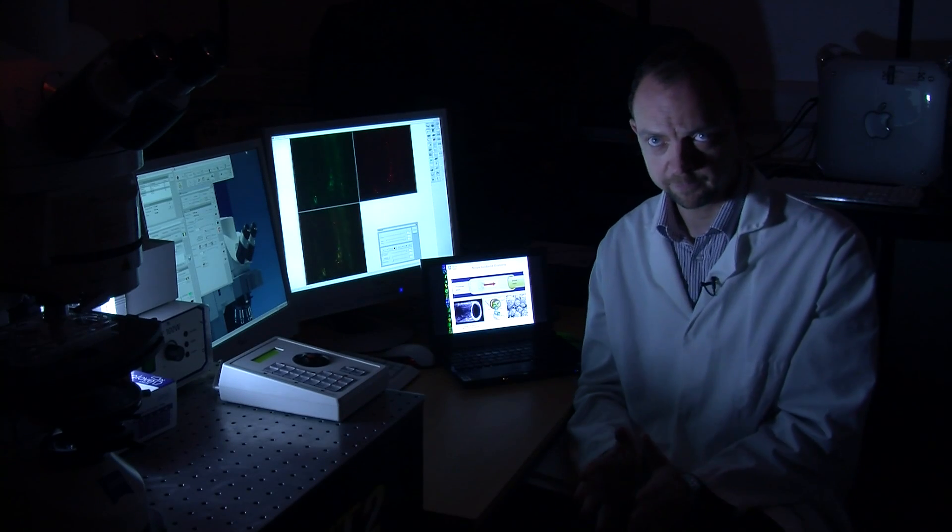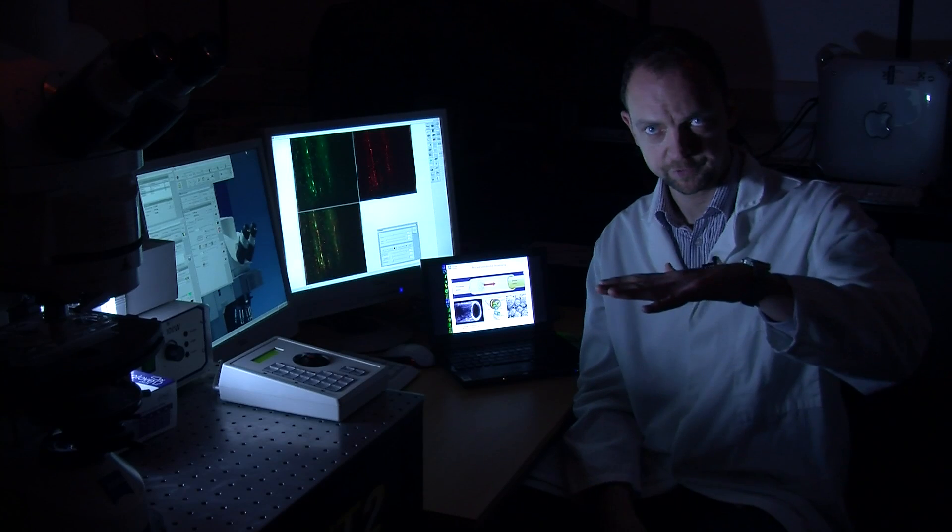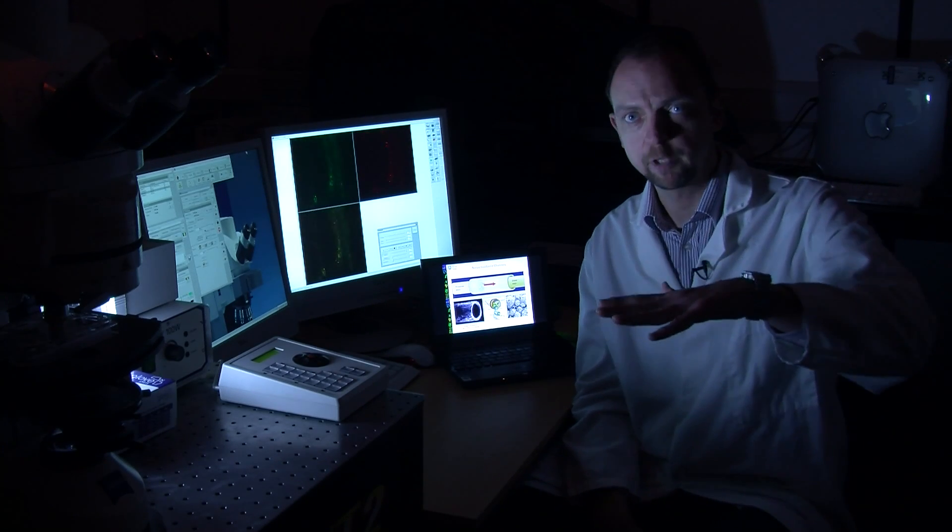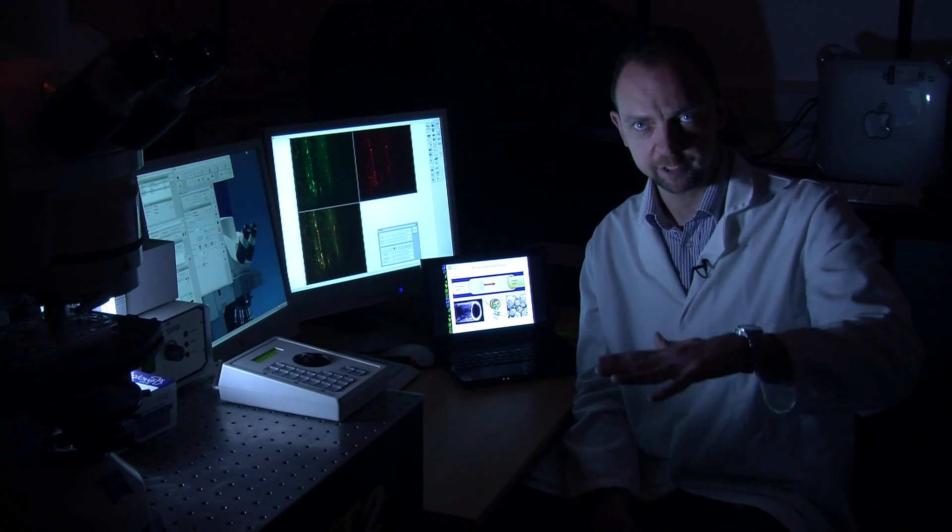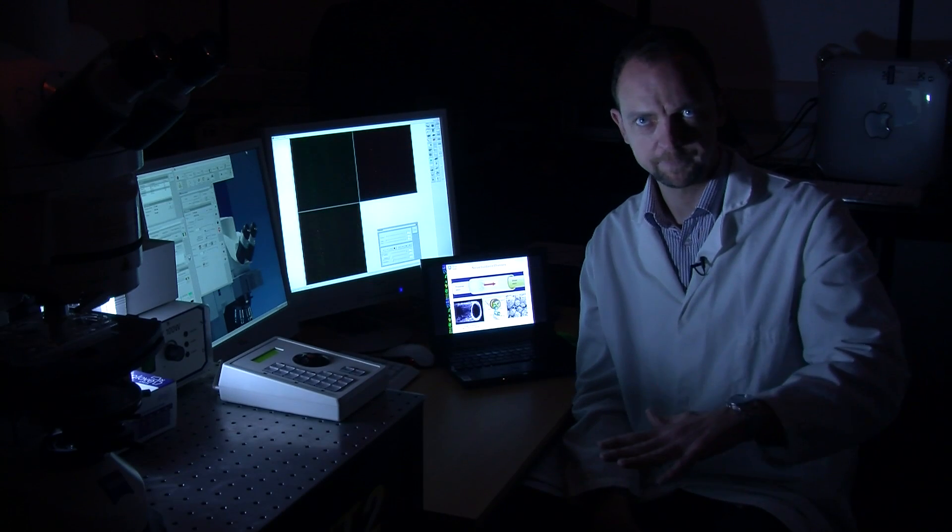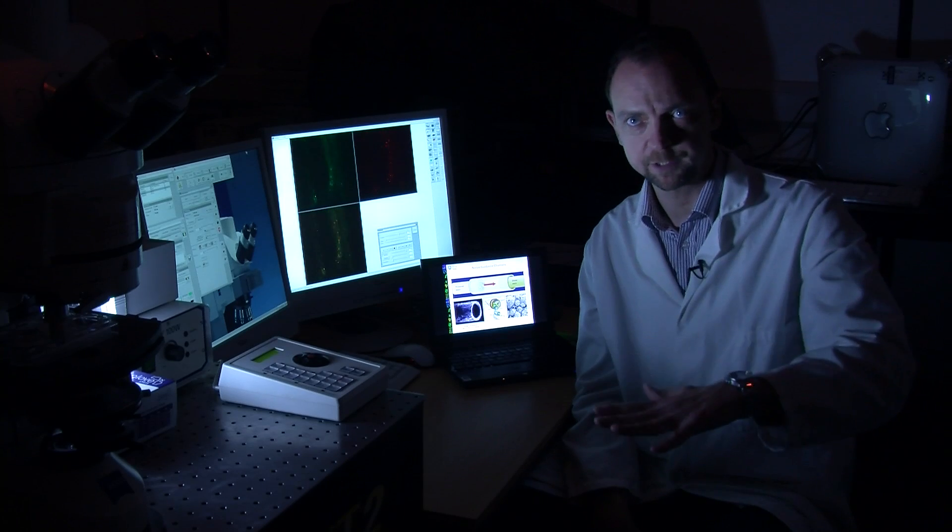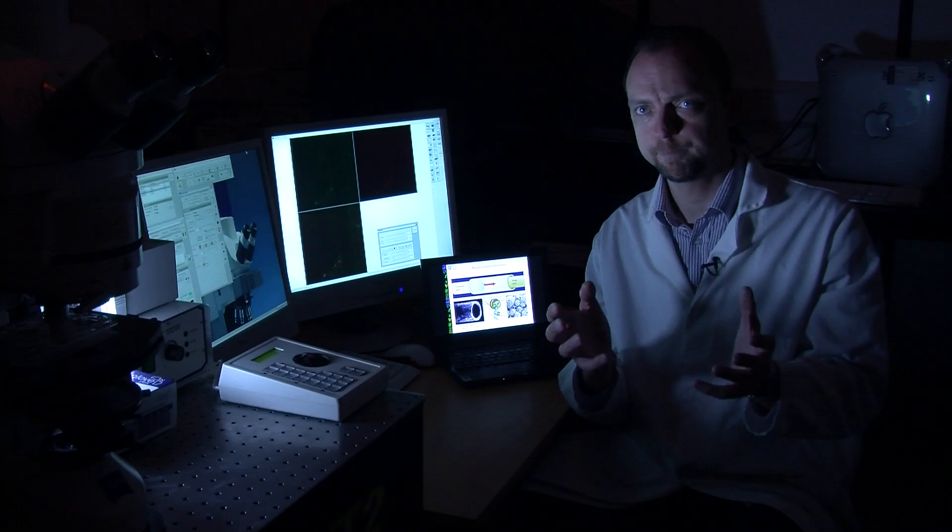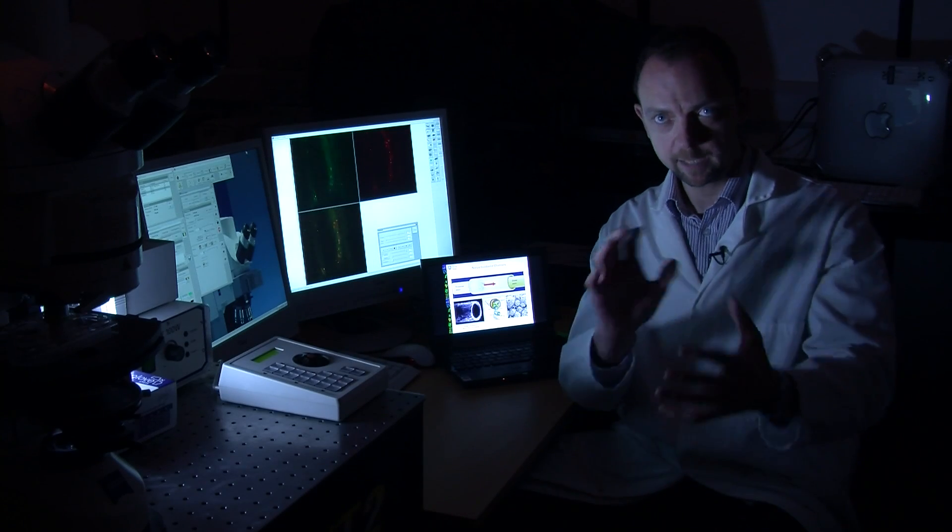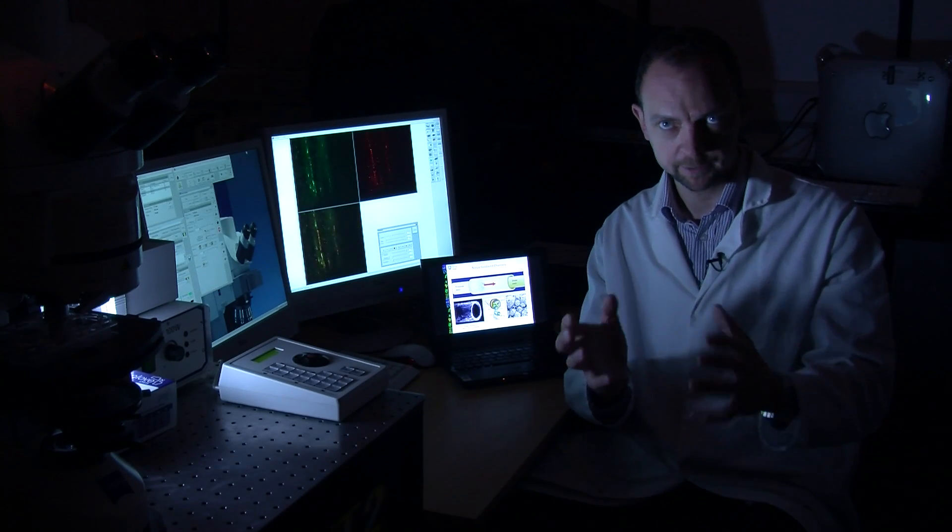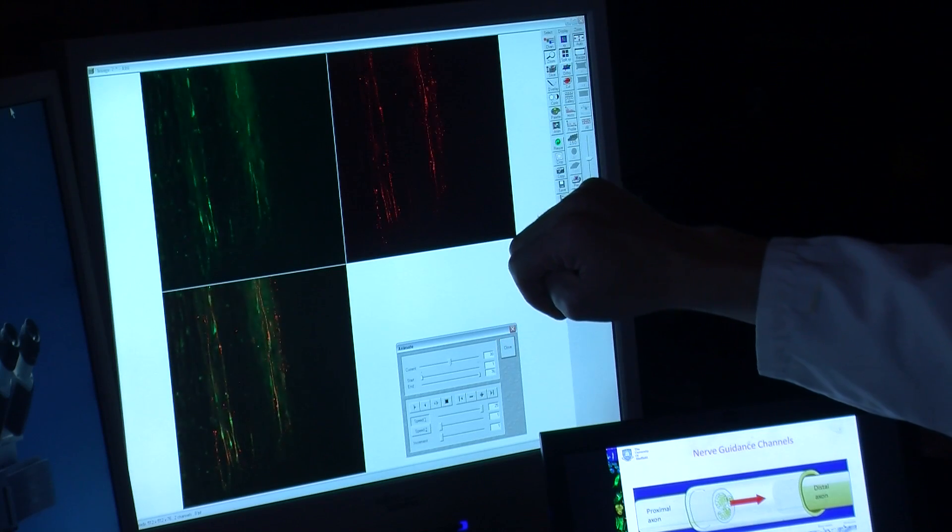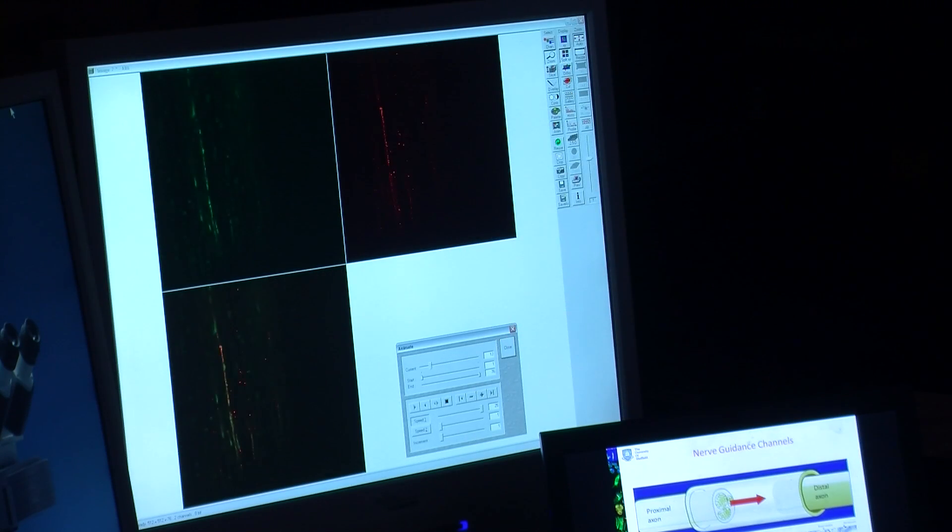We take a series of individual pictures that frame by frame image through - we call it a Z series that images from the top to the bottom of that sample. That can take quite some time, maybe half an hour. But we build up a picture that enables us to view that entire sample. The images on the screen here are actually passing through into and out of that individual sample.